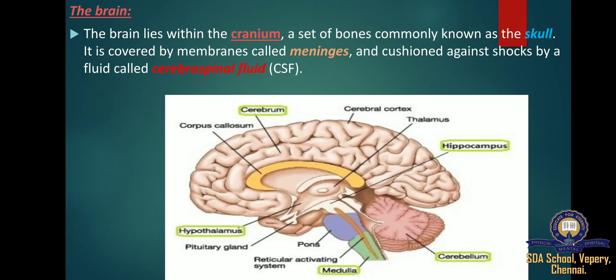Now we are going to discuss the structure of the human brain. The brain lies within the cranium, a set of bones commonly known as the skull. The cranium is the bone inside your head that protects the brain. It is covered by membranes called meninges and cushioned against shock by fluid called cerebrospinal fluid. This fluid is found between the meninges and inside the brain. It helps distribute nutrients and other chemicals to the neurons of the brain and collects waste from them.